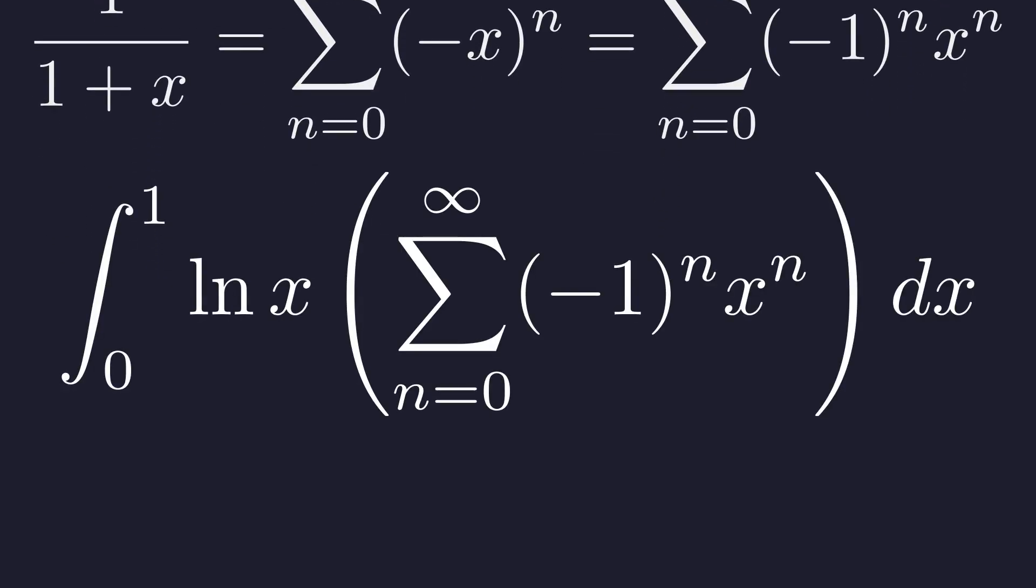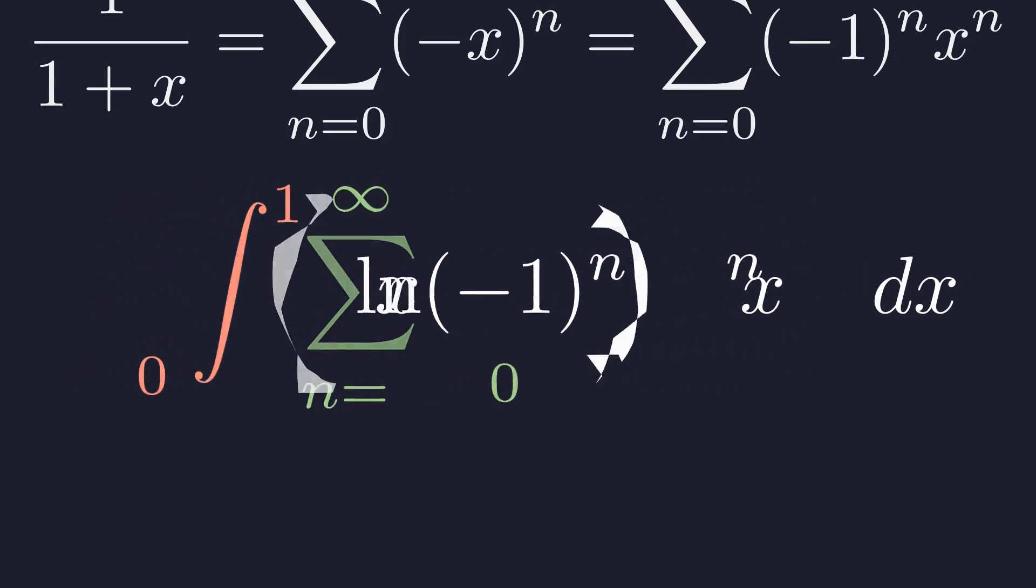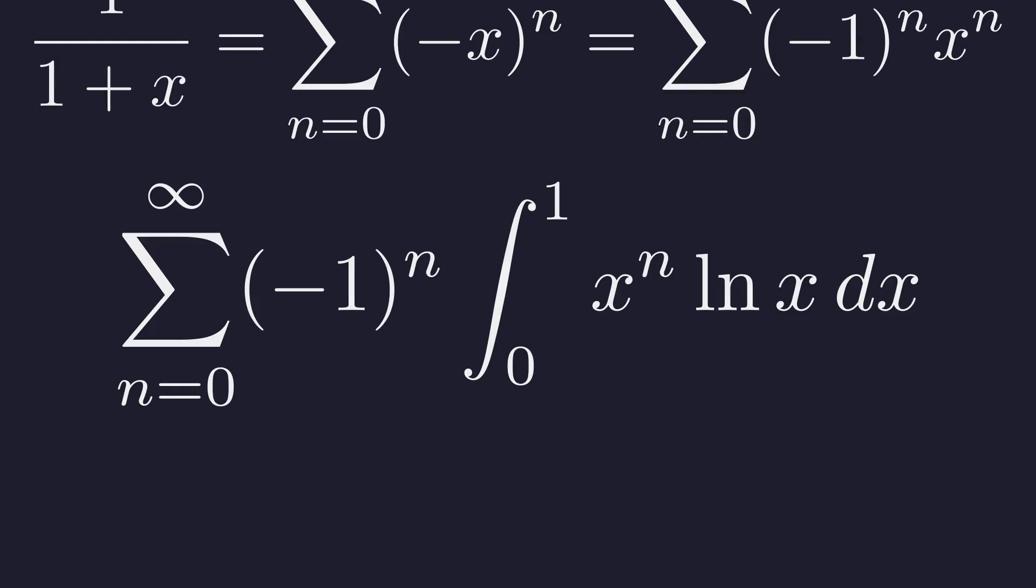Now we substitute this back into our integral. Because this series converges uniformly, we can swap the integral and the summation. This transforms one impossible integral into infinitely many simpler ones. That's the first piece of magic. What we just did is turn a problem with no known formula into an infinite family of problems we can actually solve.